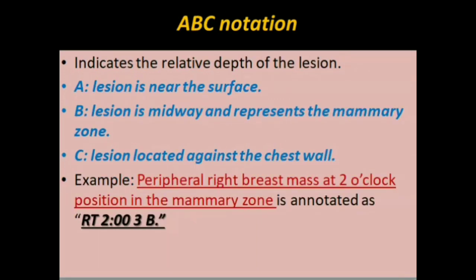ABC notation indicates the relative depth of the lesion. A indicates the lesion is near the surface. B indicates the lesion is confined to the mammary zone, which is midway. C indicates the lesion is located deep. For example, a lesion in the right breast at 2 o'clock in the mammary zone would be annotated as right 2 o'clock 3B. B shows the depth.